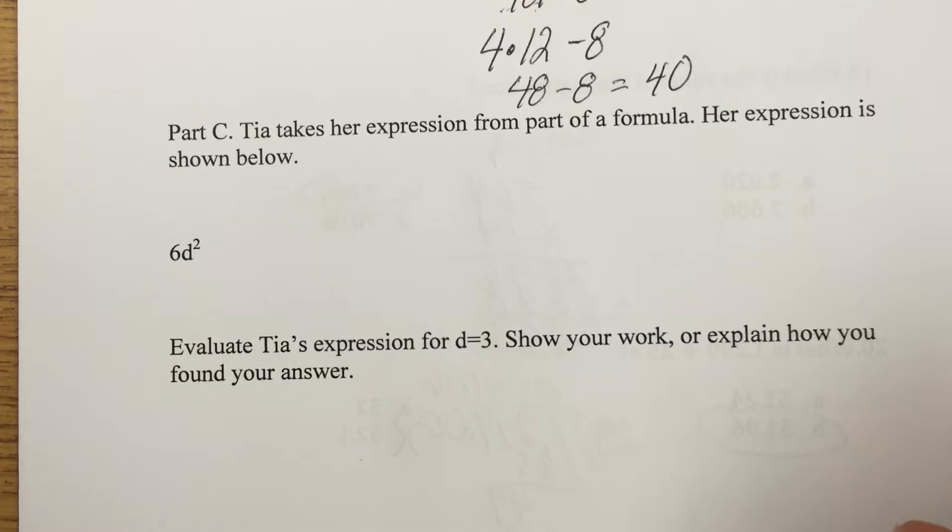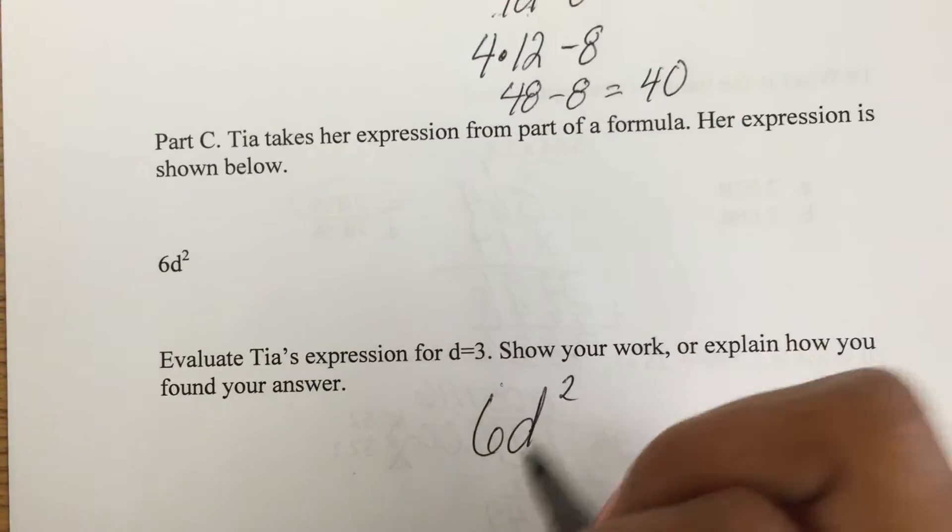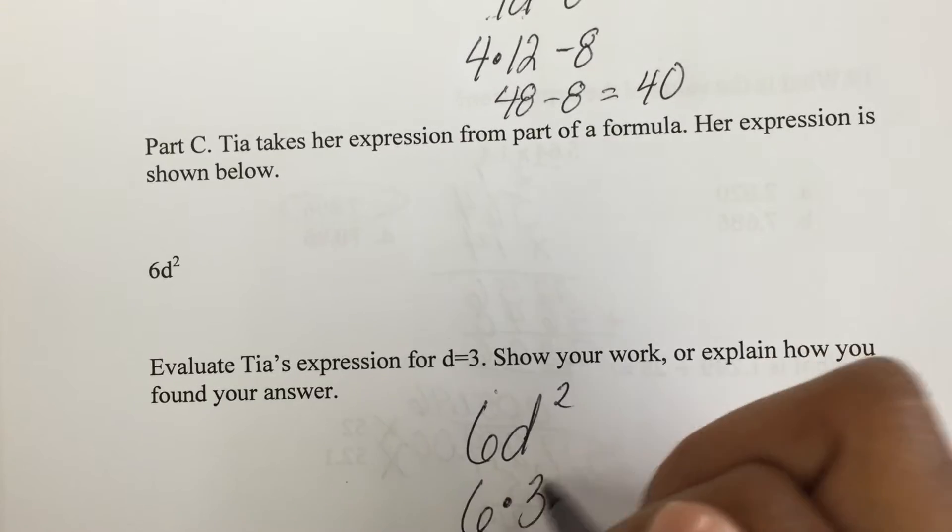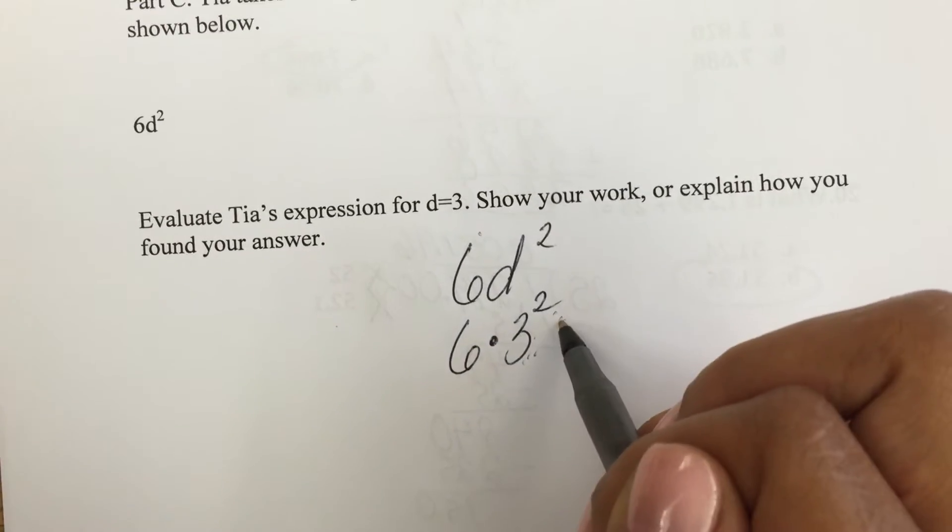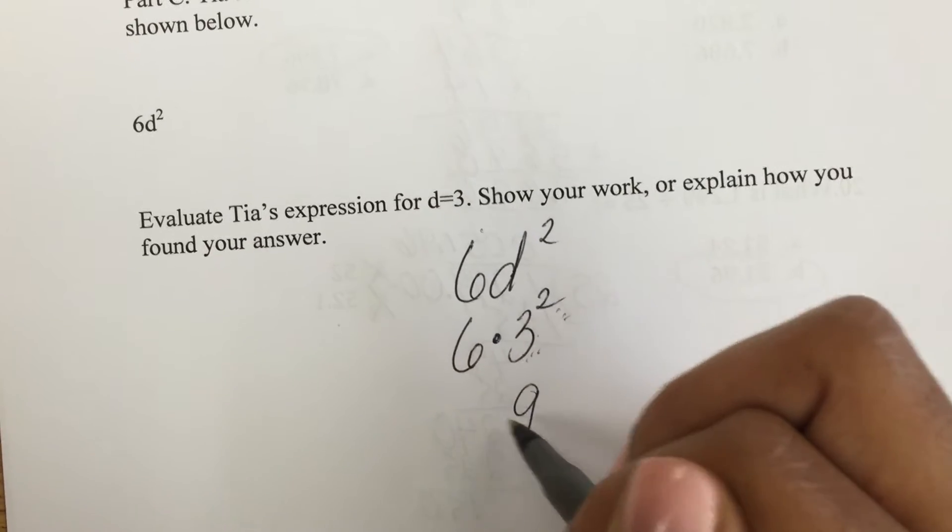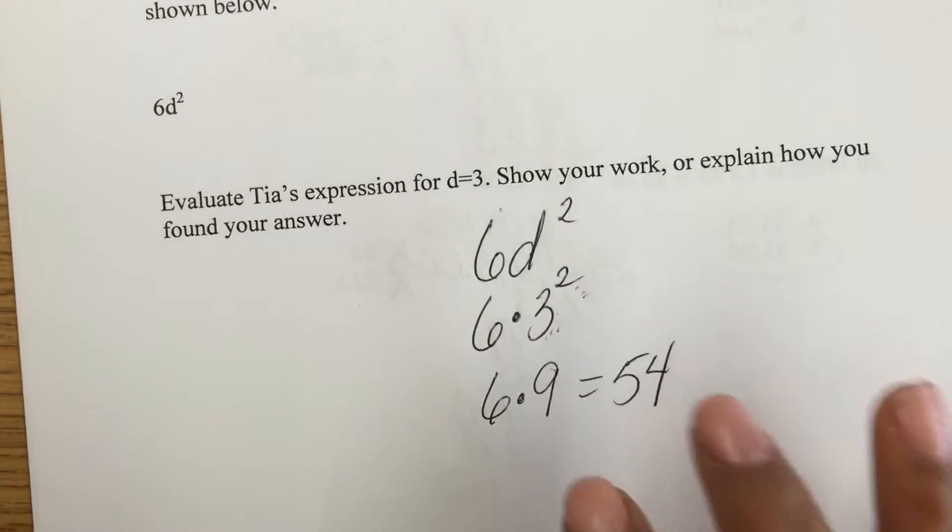And the last part, I have the expression 6d squared when d equals 3. So 6 times 3 squared. Order of operations. I have to do this exponent first. 3 to the second power is 9. 6 times 9 is 54. Okay. Let's keep going.